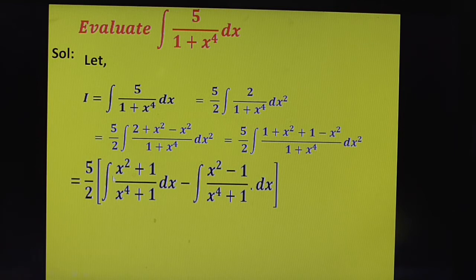That is 5 by 2 of integral x square plus 1 by x power 4 plus 1. Here, we are taking minus common and writing it as minus integral x square minus 1 by x power 4 plus 1 dx. Now, you can guess your next step.